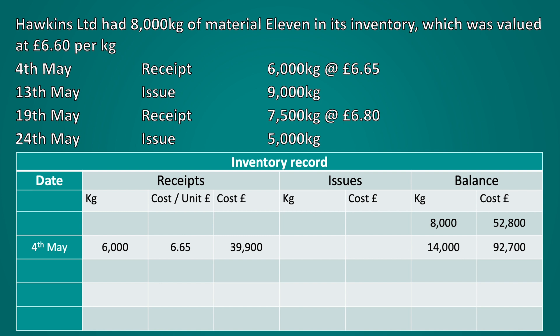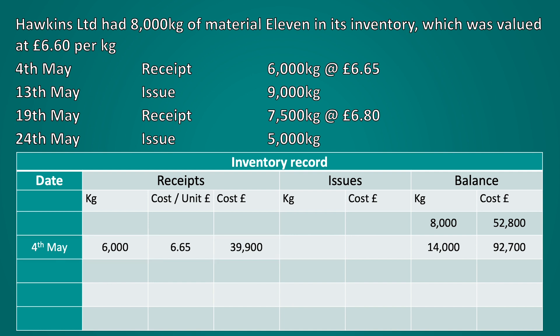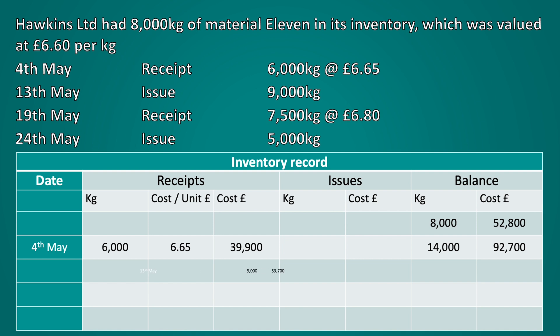Now we need to record our first issue on the 13th of May under the last in first out inventory valuation method. We start from the newest inventory available, which would be the 6,000 kilogram receipt recorded on the 4th of May. As the issue is for 9,000 kilograms, this still leaves a further 3,000 kilograms that needs to be taken from the next available inventory — the opening balance of 8,000 kilograms. The value of the issue is therefore made up of two inventory values: 6,000 kilograms × £6.65 plus 3,000 kilograms × £6.60, equalling a total of £59,700.